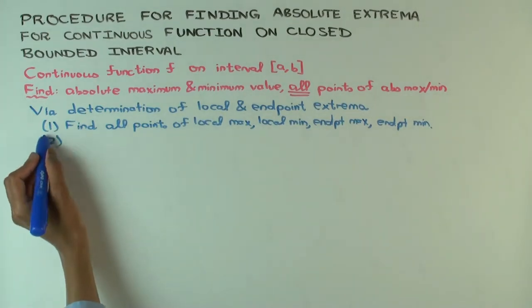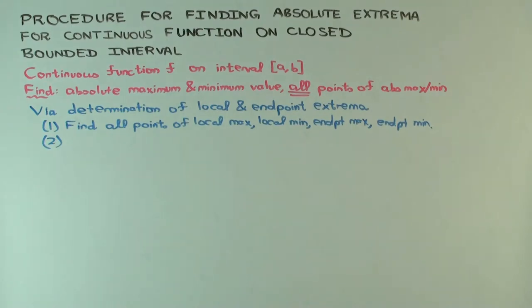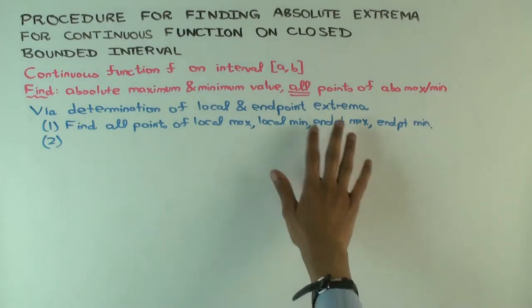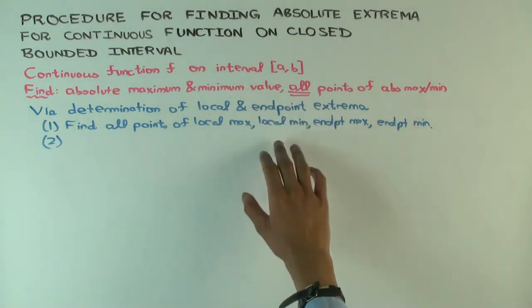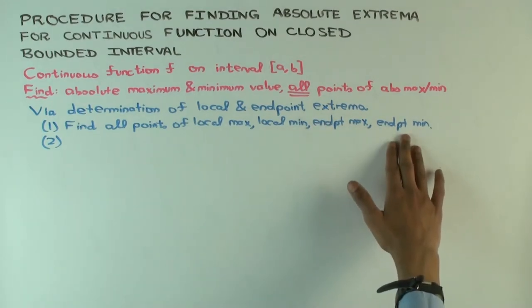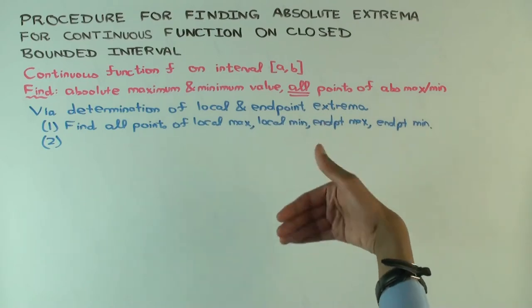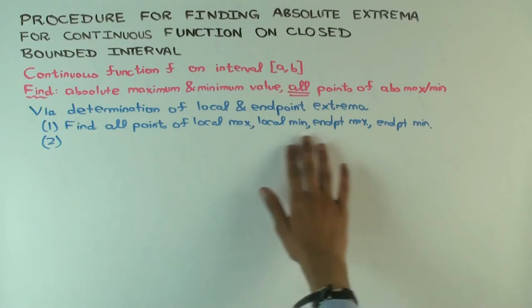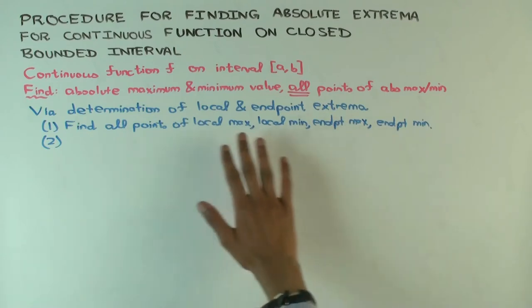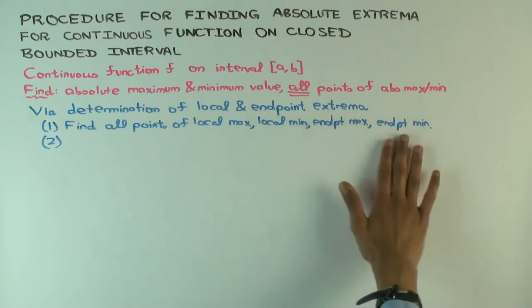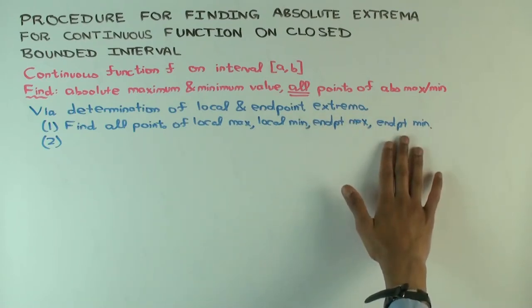The main fact you're using is this: any point of absolute max is either a point of local max or a point of endpoint max. And any point of absolute min is either a point of local min or a point of endpoint min. Because we know the absolute max and absolute min do exist, these are precisely the candidates. Local max and endpoint max are precisely the candidates for the absolute max, and local min and endpoint min are precisely the candidates for the absolute min.